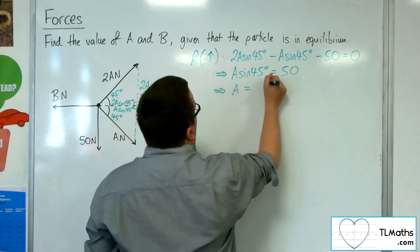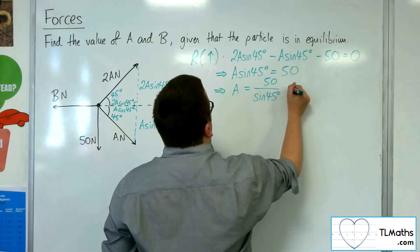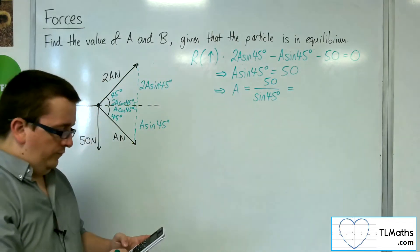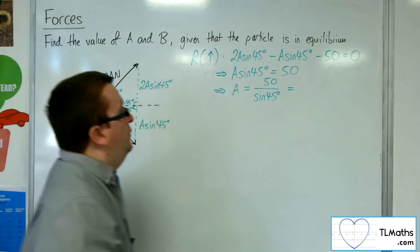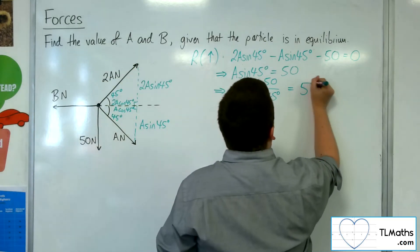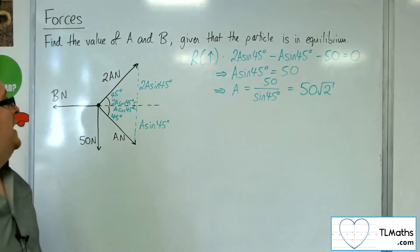So A is 50 divided by sine of 45. So 50 divided by sine of 45 is 50 root 2. So that's the value of A.